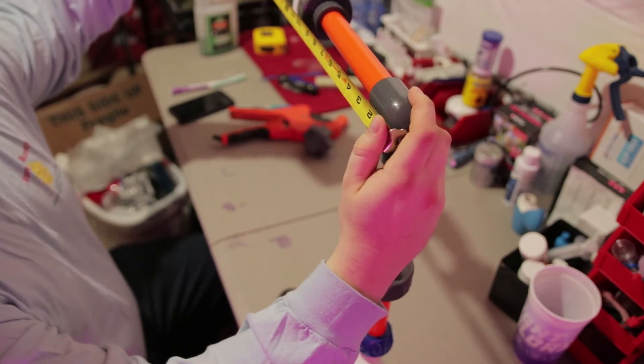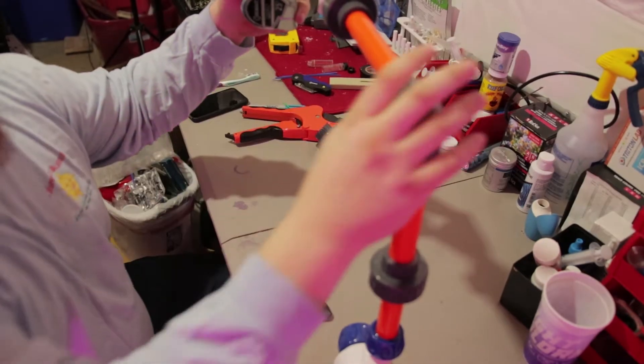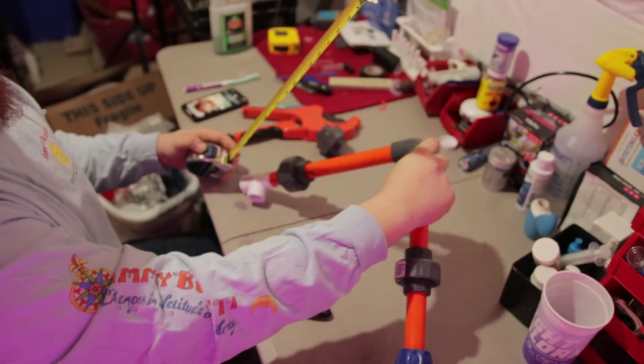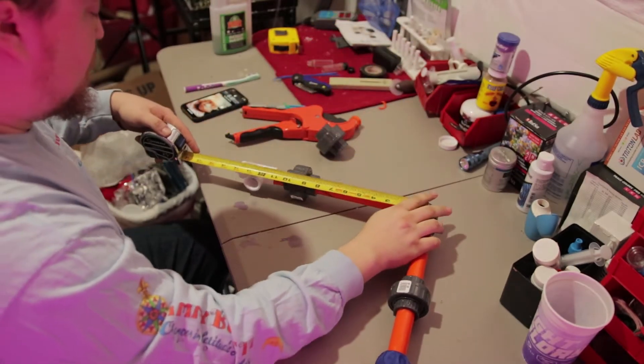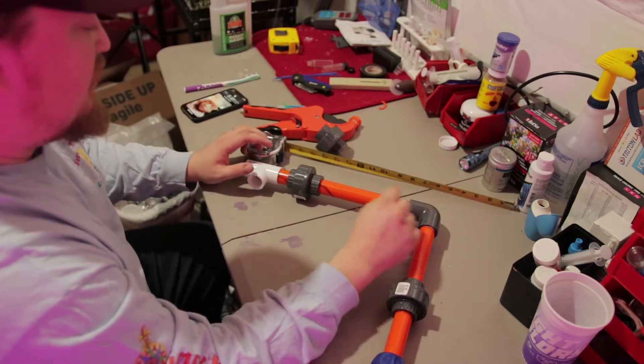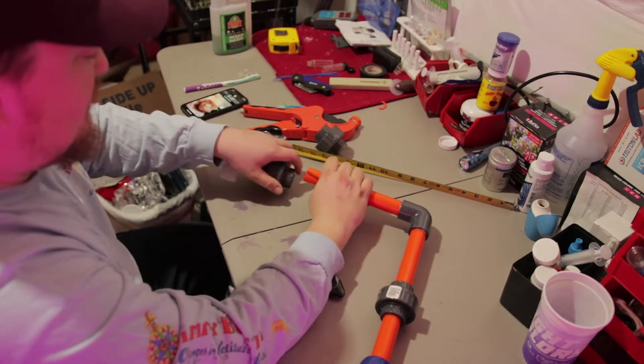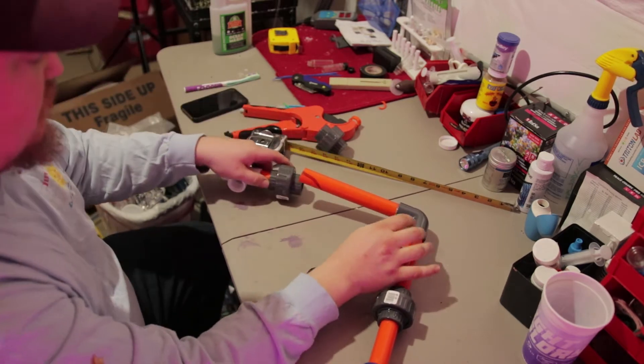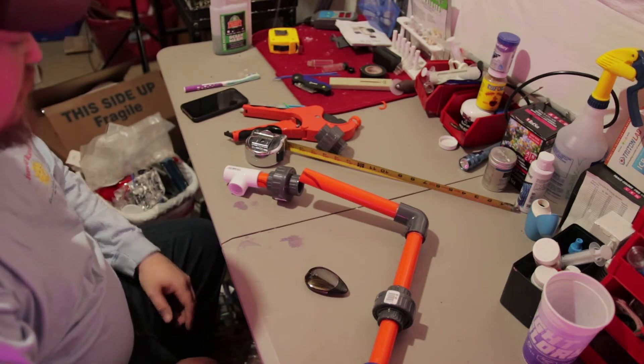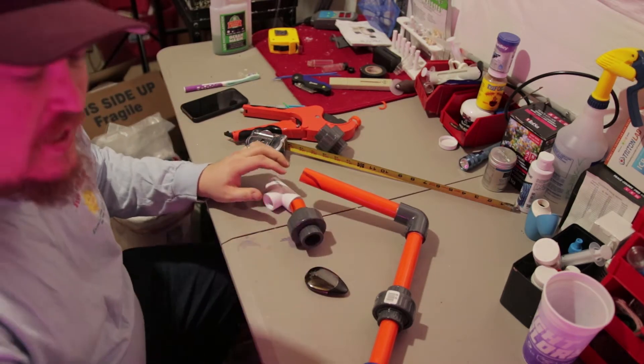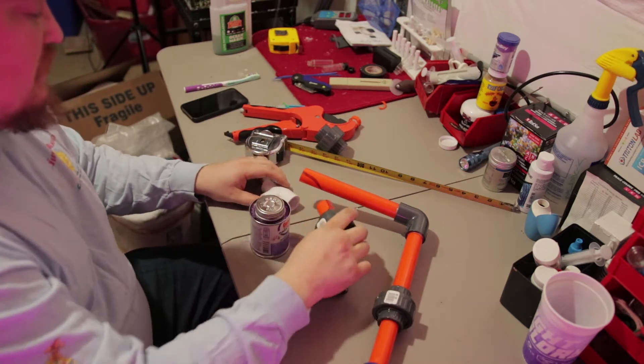So right here we're already at 15 inches and as I discussed I really want another union on here so probably going to have to cut this pipe down a little bit like let's just say an inch and then that should allow for a little bit more room for the union. So let's go ahead and get this, let's just show you real quick how we glue some of this stuff together.